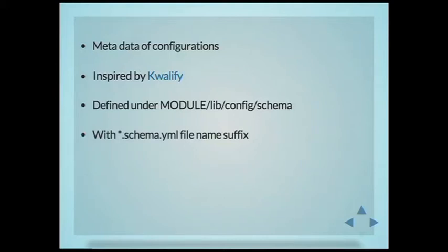The need for configuration schema came because we didn't really know what the configuration looked like. One of the key examples is that we didn't know which pieces of configuration are translatable. That's one of the properties the schema defines — whether a particular configuration item is translatable or not.